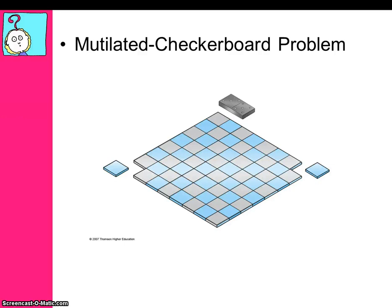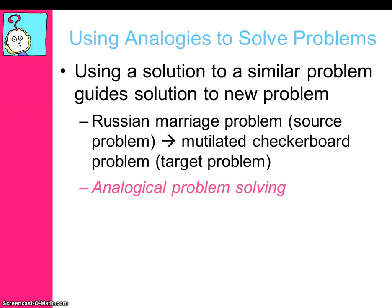These are examples of how we can use an analogy to solve an otherwise complex problem. Using a solution to a similar problem might give you the solution to the new problem. The Russian marriage problem was the source problem and the mutilated checkerboard problem was the target problem. We used our problem solving from the Russian marriage to help us solve the checkerboard problem. This is the essence of analogical problem solving — using analogies or metaphors to help us solve problems.